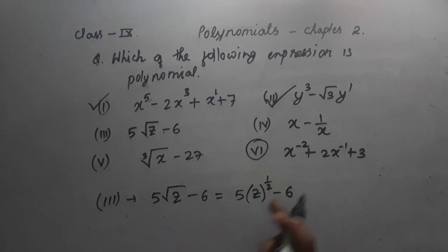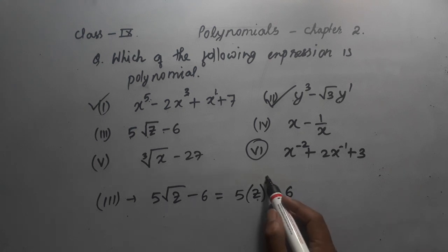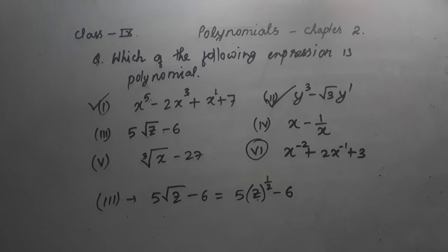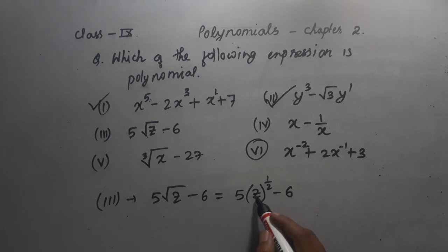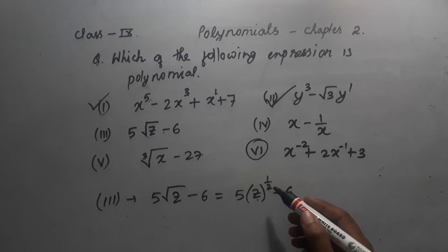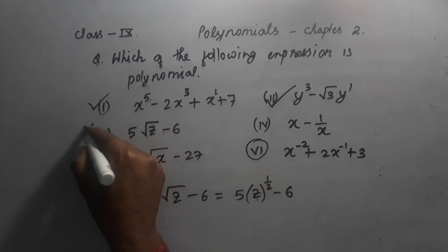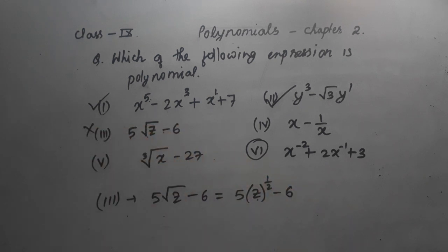For expression 3: 5√z - 6. The square root means z to the power 1/2. The cube root would be 1/3. Here the variable z has power 1/2, which is not a whole number. So this is not a polynomial.